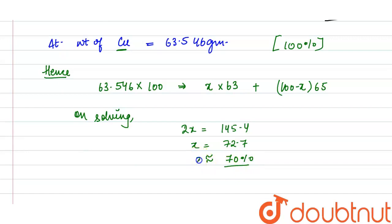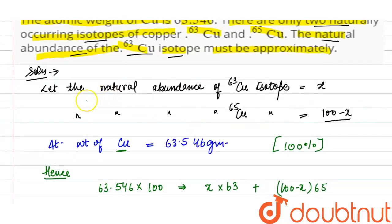So, the value of X comes out to be 70%. Now, we can say the natural abundance of copper-63 isotope is 70%.